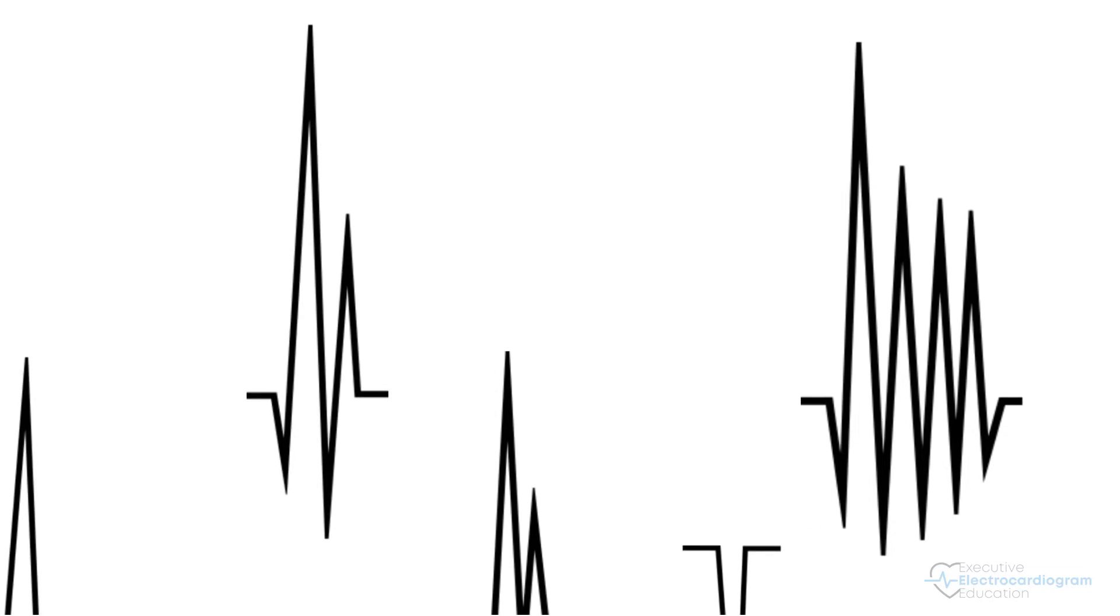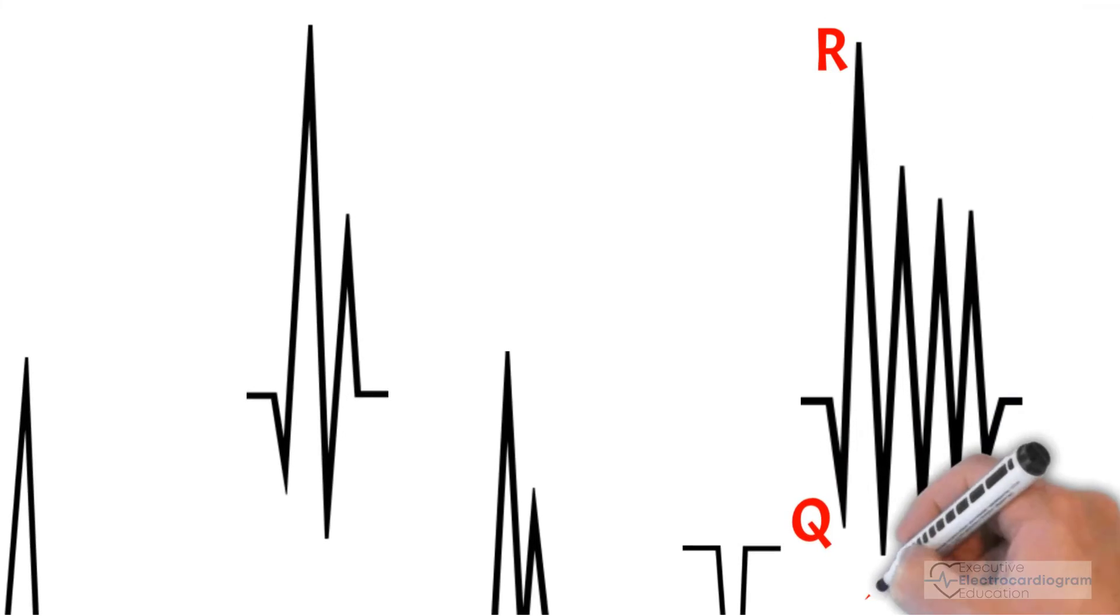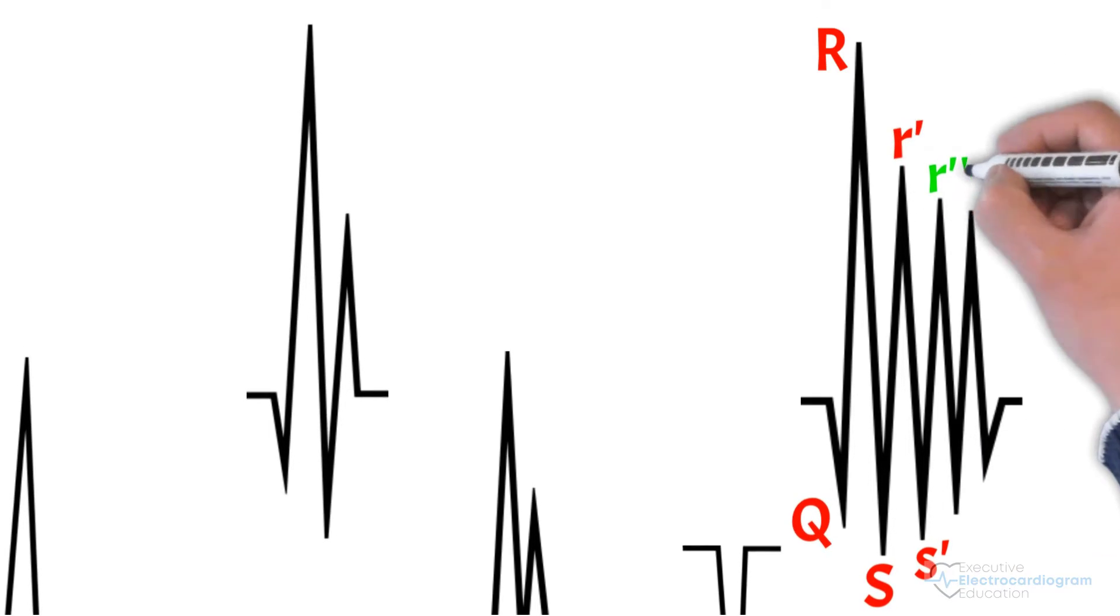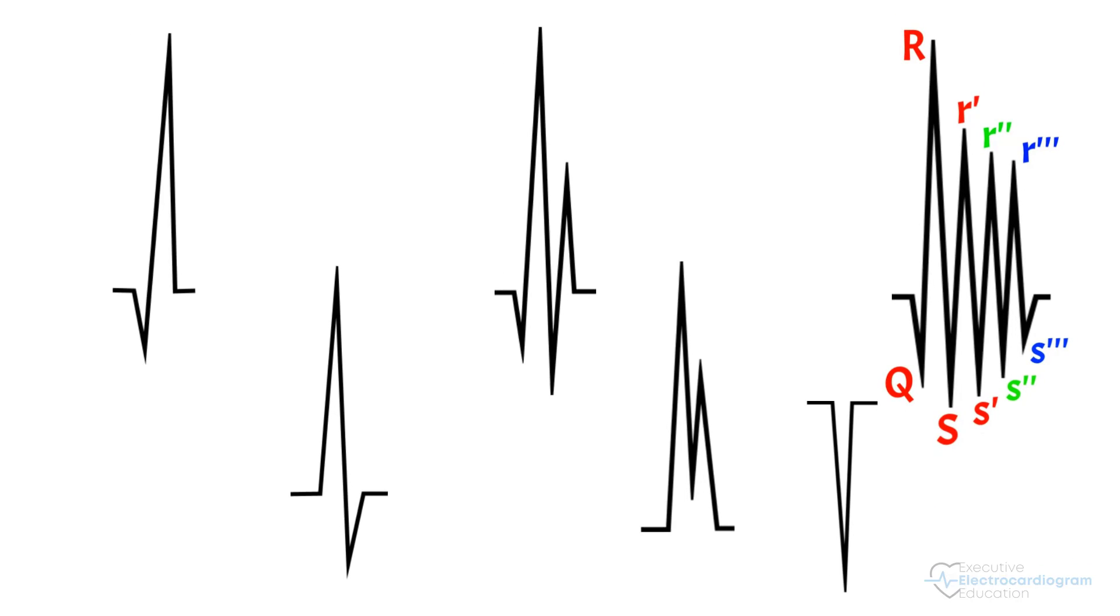Lastly, let's name this ridiculous looking QRS complex. Here is a Q wave, an R wave, an S wave, an R prime, an S prime, an R double prime, an S double prime, an R triple prime, and finally an S triple prime. Long but easy.